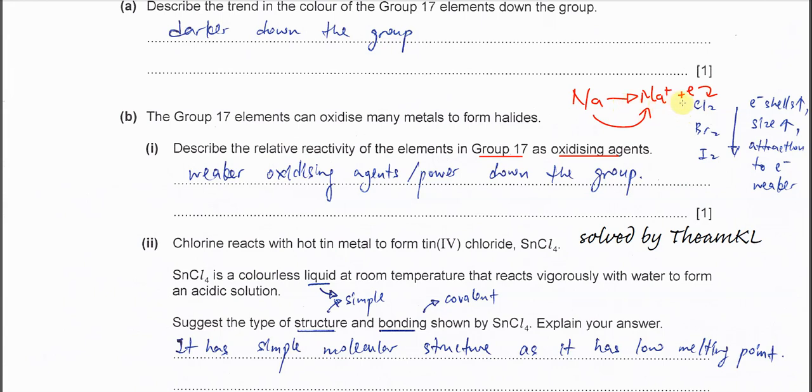We need to know the ability of these elements to gain these electrons or to attract electrons. When down the group, the electron shell increases, more electron shells. Size becomes larger and therefore the attractions to the electron now is weaker.